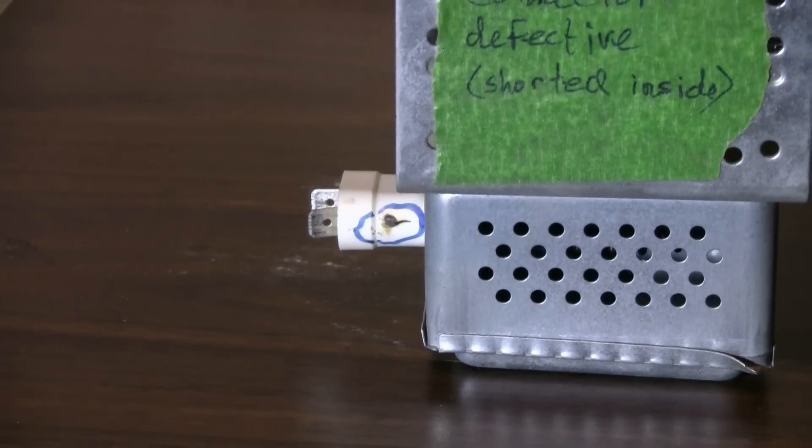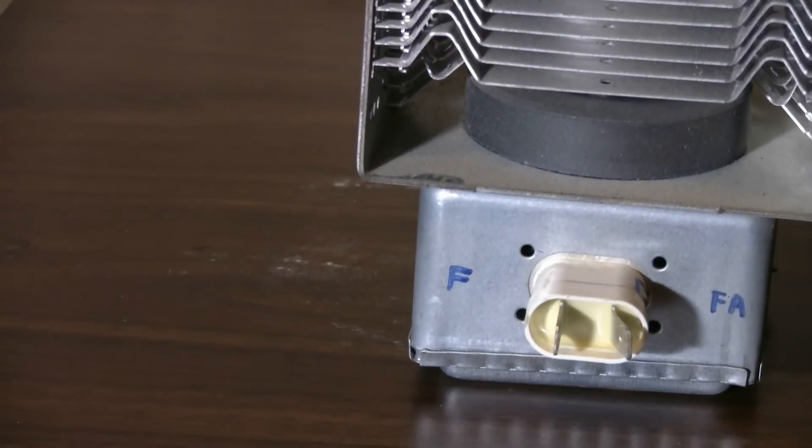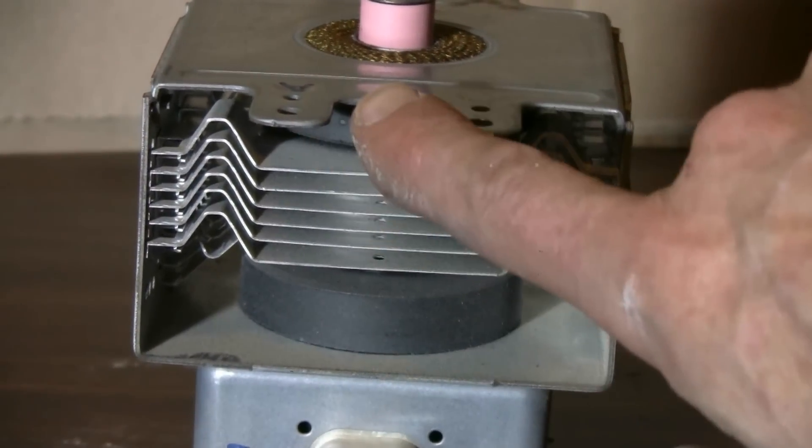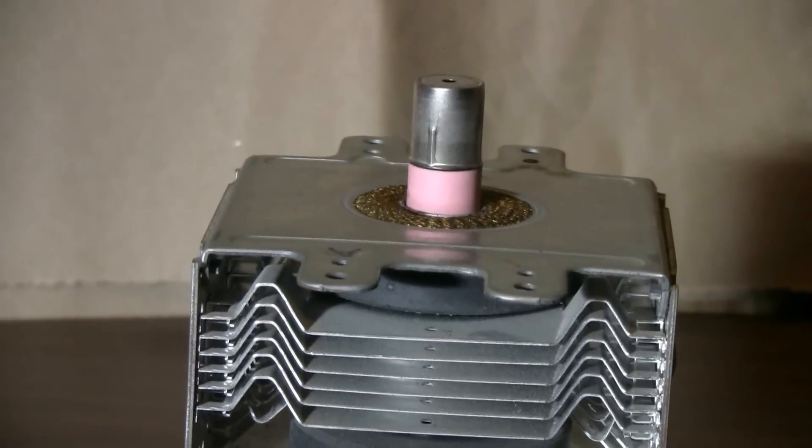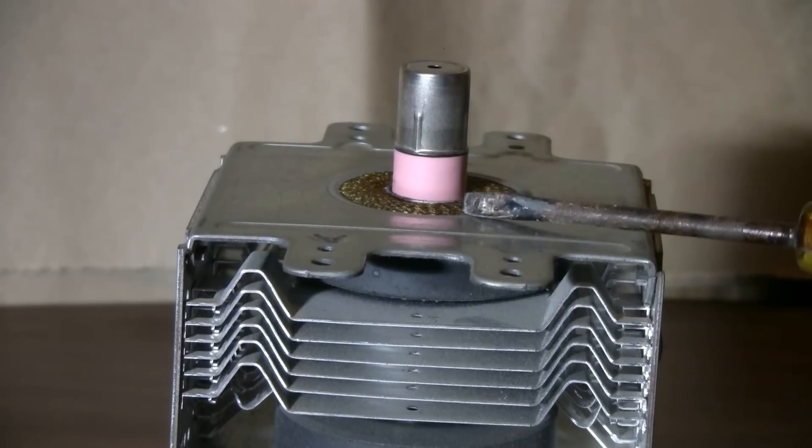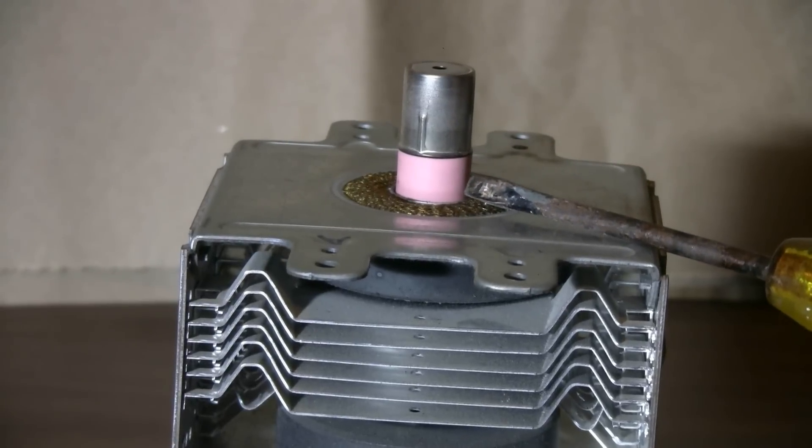So what I wanted to do with this one is take it apart for these ring magnets that it has in it, but there's a problem with magnetrons. This pink insulator can be a problem.